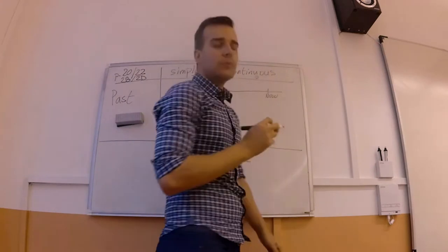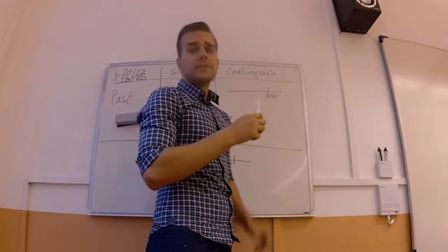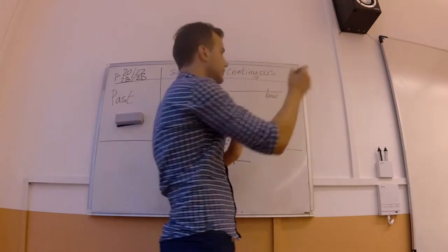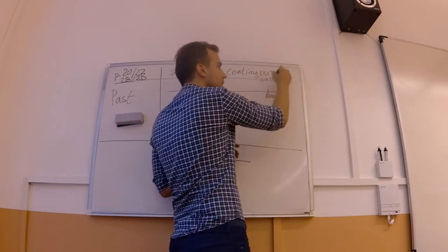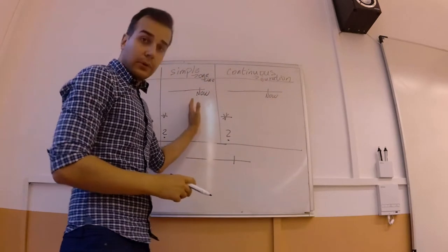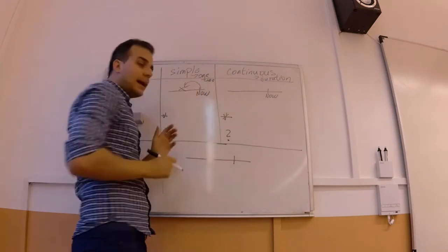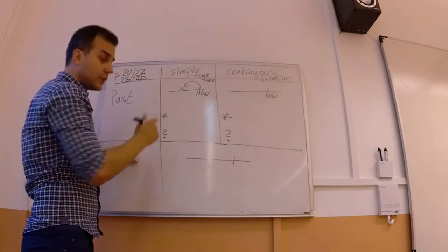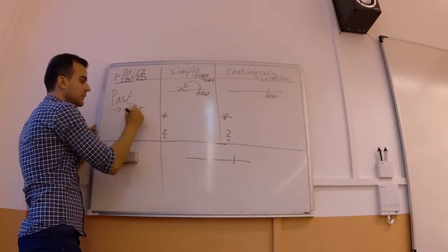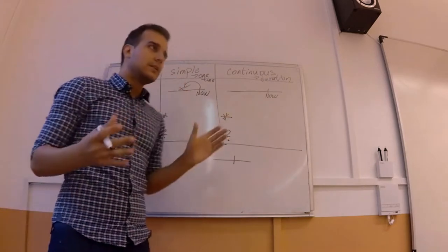The continuous tense, just like when you have the present continuous, describes something that is happening over some period of time. So there is some duration. If you look at the past simple, which you already should know, then we go back to the past that we know. As we said during our lessons, it is the clear past.